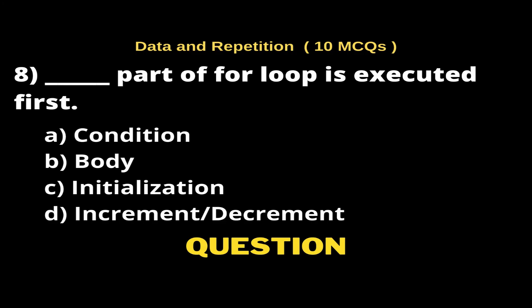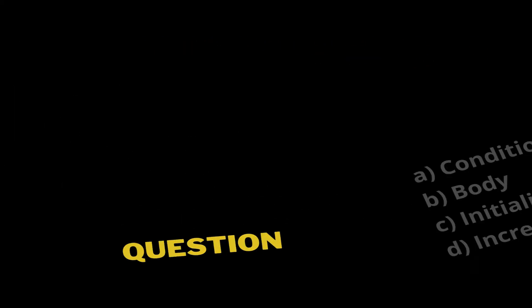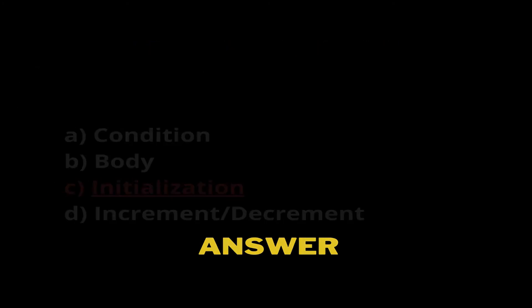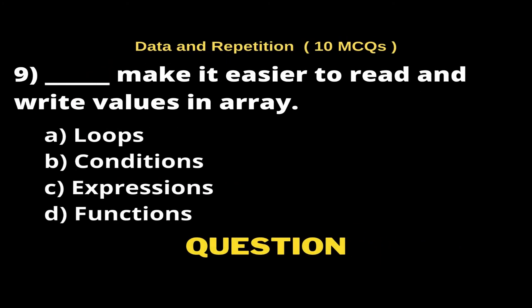Question 8: That part of loop is executed first. Options: A) Condition, B) Body, C) Initialization, D) Increment/Decrement. The right answer is Option C, Initialization.